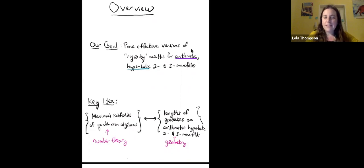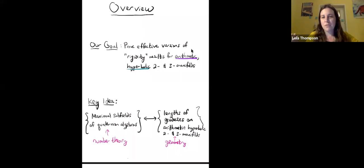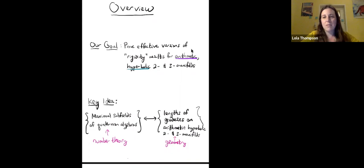Everything I'll do in this talk will be in the two-manifold setting — in other words, for surfaces. That said, everything I tell you is also true in the three-manifold setting. The only difference in the proofs is that when dealing with two-manifolds, your matrix groups are defined over the real numbers, and when dealing with three-manifolds, they're defined over the complex numbers. To keep things simpler, I'm going to do everything over the reals, but if you're interested in three-manifolds, just imagine doing everything over the complex numbers instead.